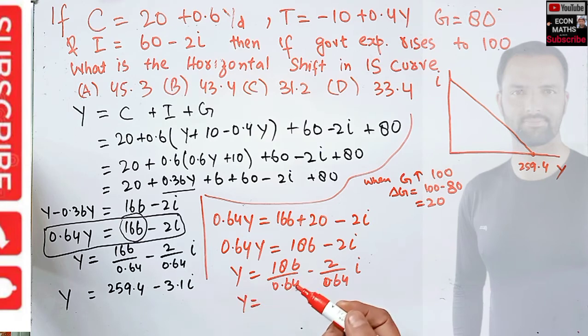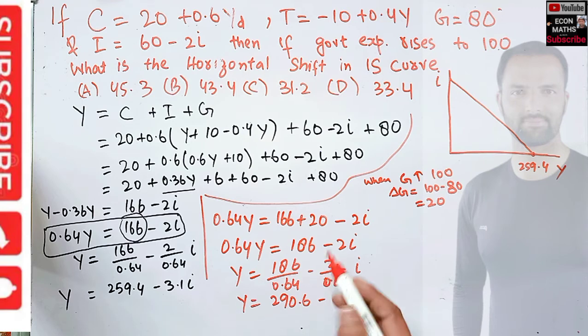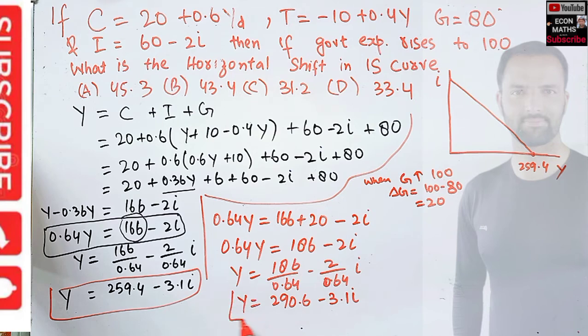This comes out to be Y = 290.6 - 3.1i. This is our final IS curve when there is a change in autonomous government expenditure by 20.